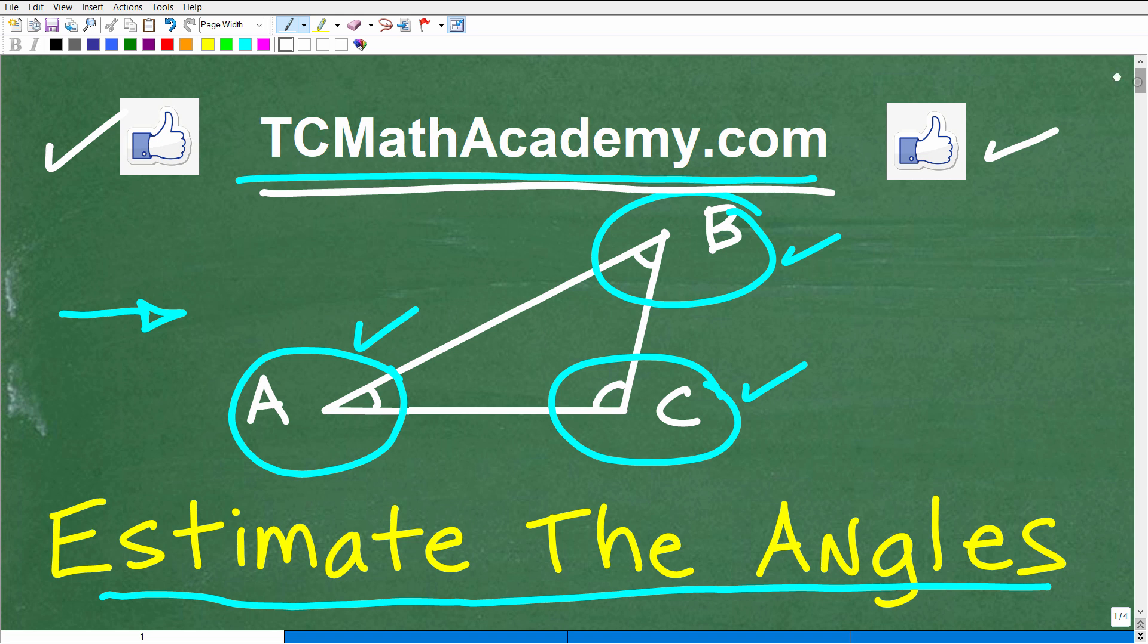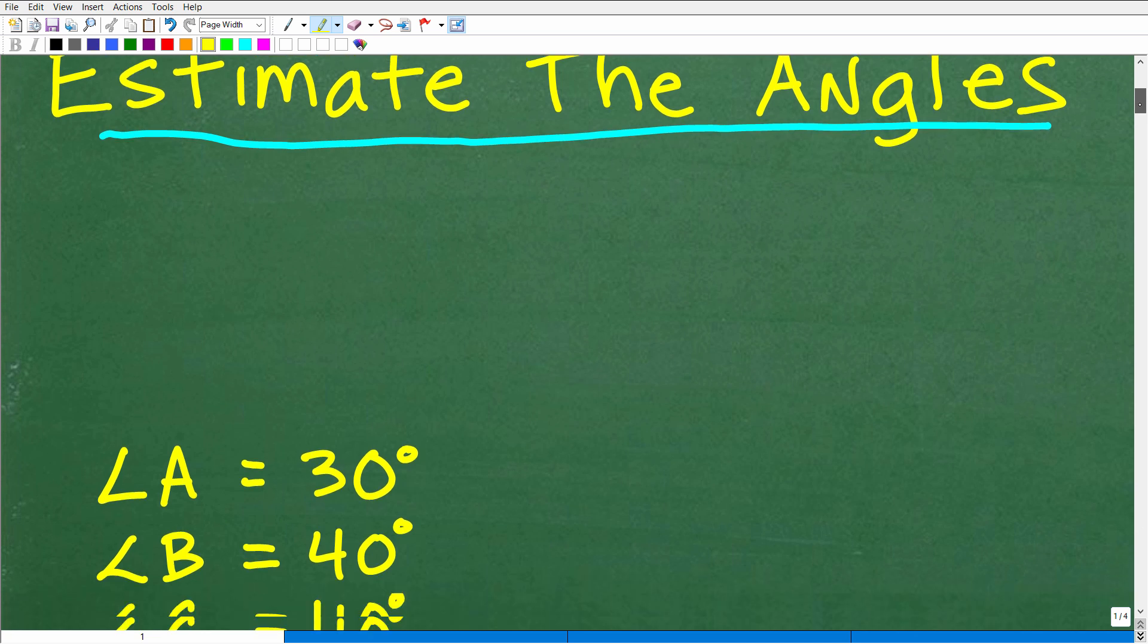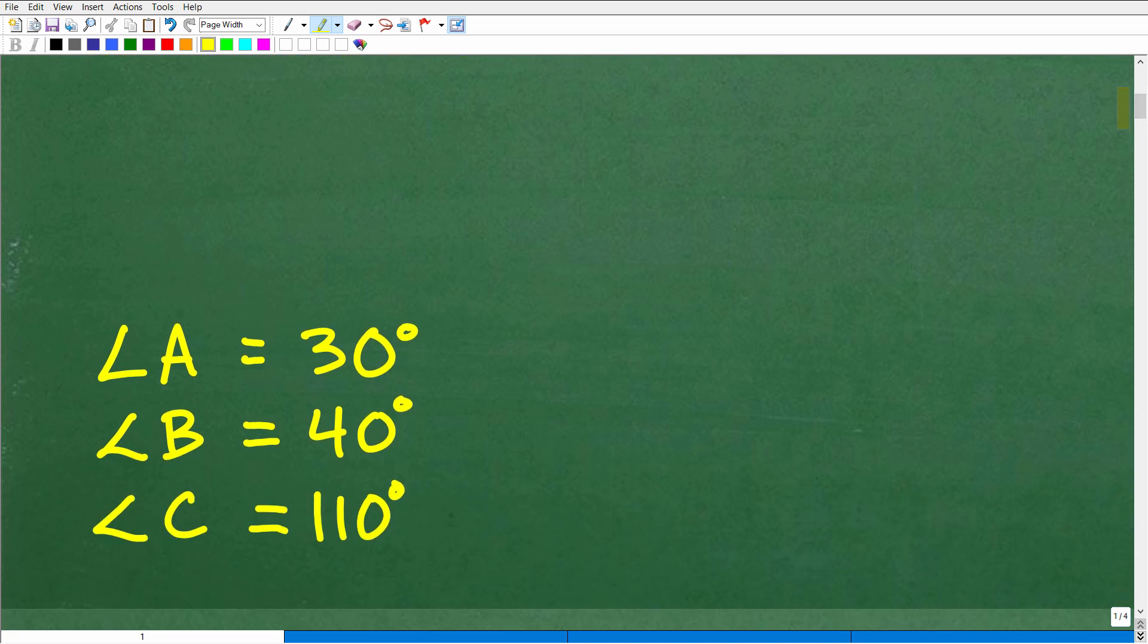Let's take a look at my answers. Yours can vary, but your answers should be somewhat close to my estimates. Here we have angle A, angle B, and angle C. Let me show you my estimates for these three angles. I'm going to call angle A 30 degrees, angle B 40 degrees, and angle C 110 degrees.